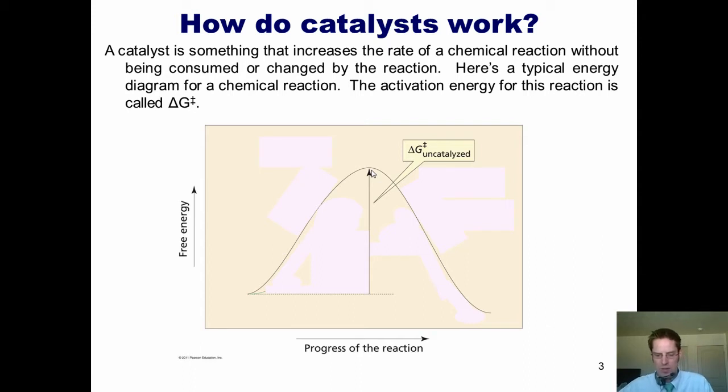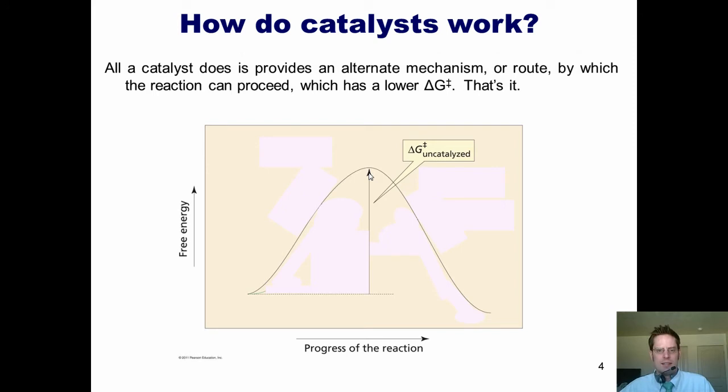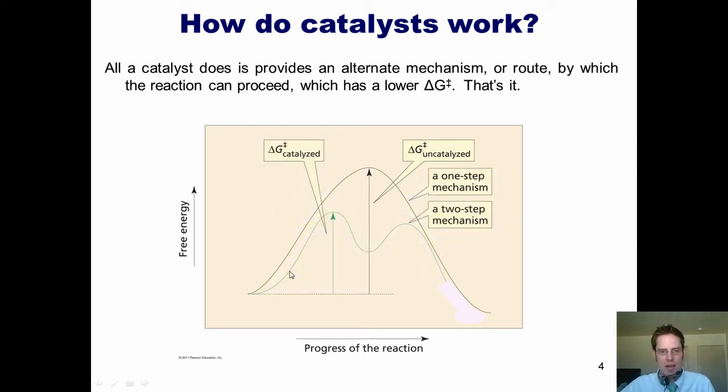So once again, in order for the reactants to get through this reaction to be converted into products, they have to proceed through some pathway that requires this amount of energy put into it up here. Does that make sense? This probably is something that shouldn't be too new, as you've been taught it back in Gen Chem.